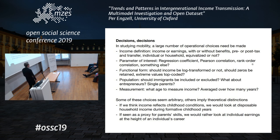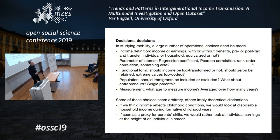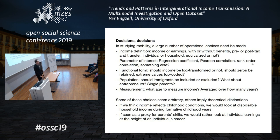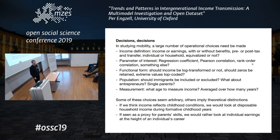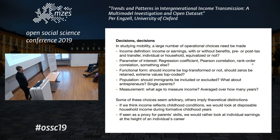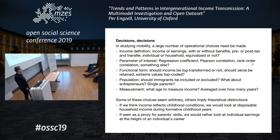Some of these choices seem more or less arbitrary, while others imply different theories. If we think inequality increases make poor parents less equipped to invest economically in their children — a causal investment mechanism — then it would be theoretically appropriate to look at disposable household income during formative childhood years. If instead we see income as a proxy for parents' human capital or skills transmitted non-economically to children, then individual earnings would seem more appropriate. Depending on what we find for different definitions, we may see different theories as more or less plausible.